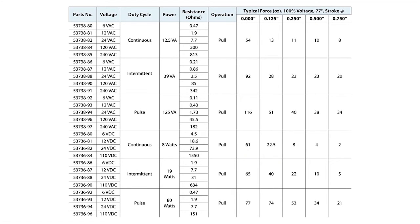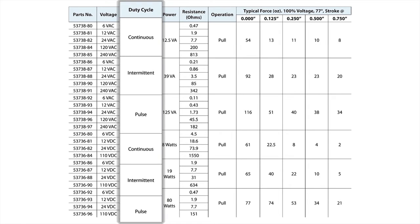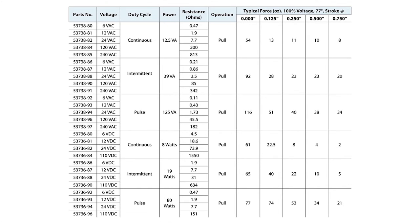Deltro's D11 solenoids are available in continuous, intermittent and pulse type duty cycle with a pull operation.